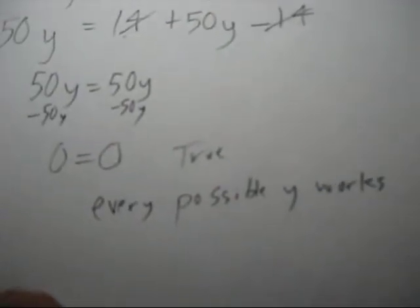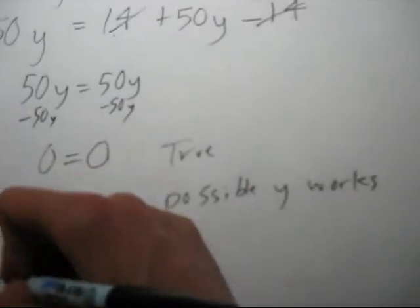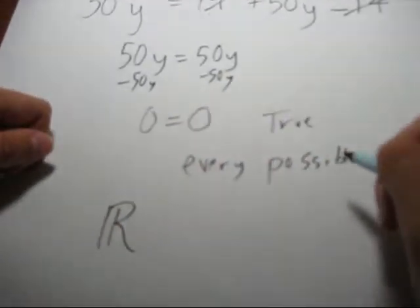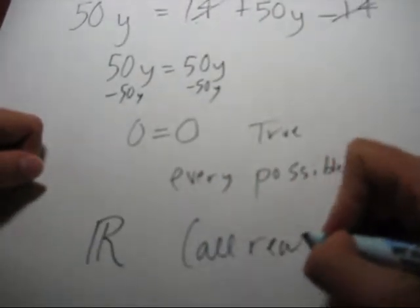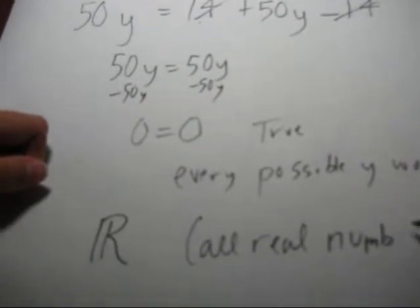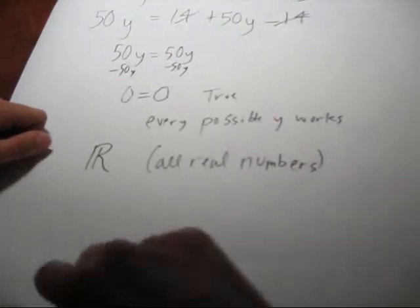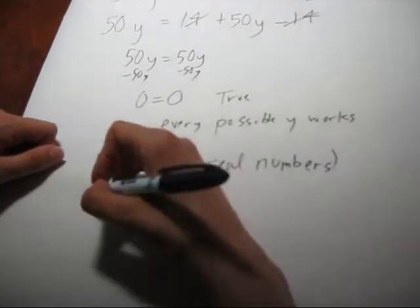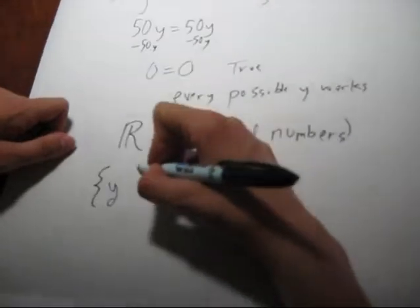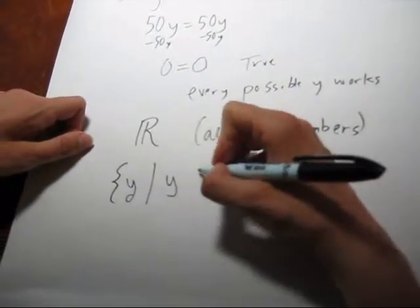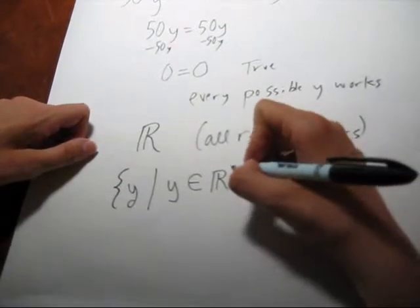So what do we put as our answer then? Well, you can put that symbol, which means all real numbers. And if you'd like to write it in fancy math notation, you'd go like this. It's the set of all y such that y, the symbol means element of or belongs to, the real numbers.